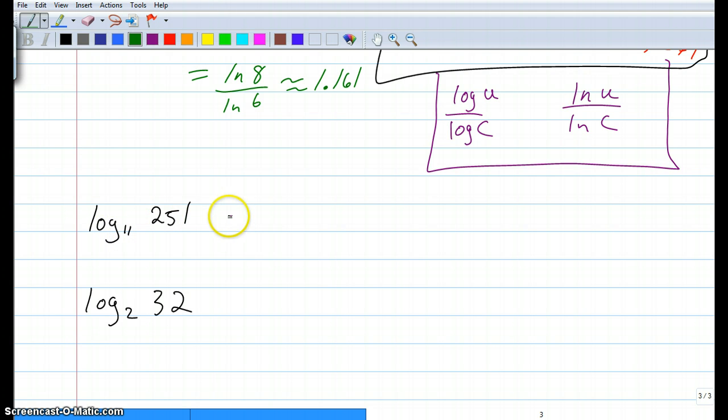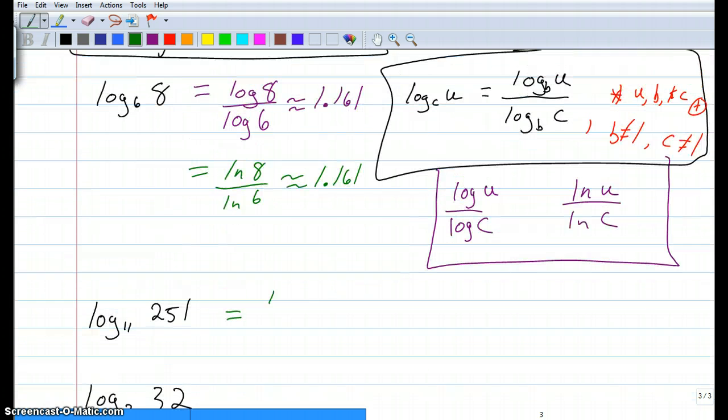Log base 11 of 251. Following our change of base formulas, we can just do log of 251 divided by the log of the base, log 11. So put in log 251 divided by log of 11, and you should get approximately 2.304. Hey, if I wanted to check my answer, how could I to make sure that I did this right? Well, we're saying that log base 11 of 251 is 2.304. So we could say, in exponent form, 11 raised to the 2.304 is 251. And you could check that, and I think it is about 251.